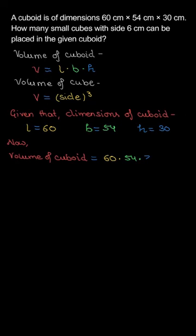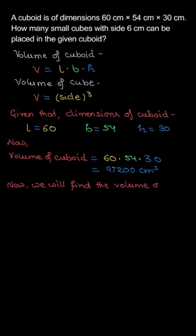Further, volume of cuboid we can find here, 60 times 54 times height. If you multiply it, it is 97,200 cm³. Now, we will find the volume of cube.